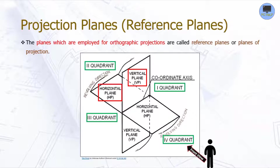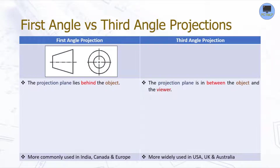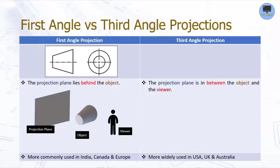Let's look at the two major projections under orthographic projection. The first one is the first angle projection, represented by this symbol. In first angle projection, the projection plane lies behind the object — in other words, the object is between the projection plane and the viewer. This method is more commonly used in India, Canada, and Europe.